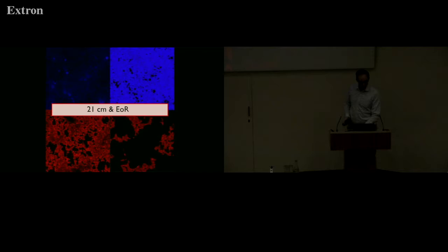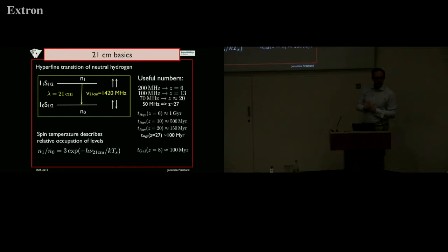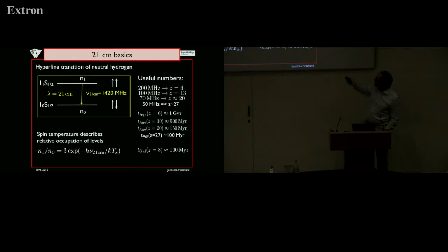The 21-centimeter line is the hyperfine splitting of the hydrogen ground state. You've got a proton spin and an electron spin, which can be aligned or anti-aligned and do spin flips, absorbing or emitting photons with a wavelength of 21 centimeters. That 21-centimeter or 1.4 gigahertz signal redshifts into the radio band, so frequencies somewhere between 50 and 200 megahertz are of interest here. 200 megahertz corresponds to redshift 6, 50 megahertz to a redshift of about 27, corresponding to times going back to about 100 million years after the Big Bang. So we're really starting to look back into the very early universe with these observations.